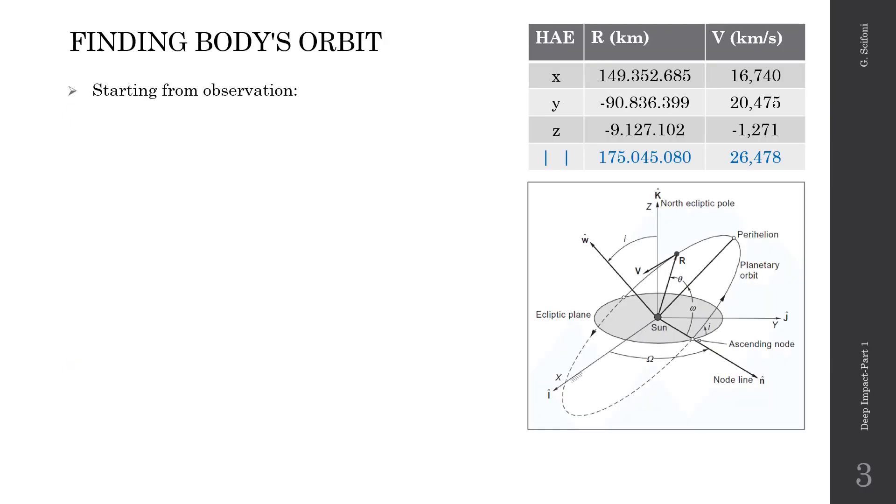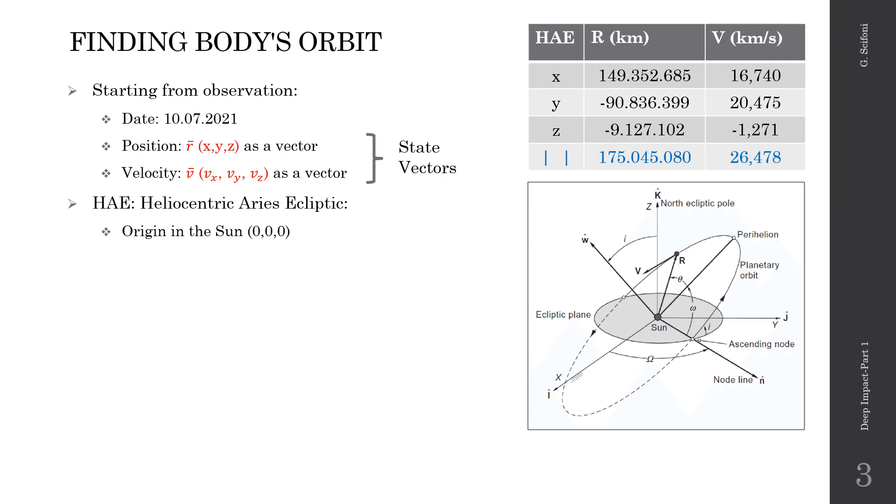Let's start from the observation. On a defined date, the 10th of July 2021, a celestial body is discovered at a certain position and having a defined velocity. Position and velocity are both vectors, also three components each, altogether six coordinates. Moreover, we need to refer those coordinates in a heliocentric reference because the Earth is also moving. We adopt the heliocentric Aries elliptic system, which is so defined: The origin in the Sun, the x-axis oriented to the first point of Aries, that is the vector Sun-Earth at the vernal equinox, z is normal to the ecliptic plane and oriented to north, and y is given by the right-hand rule.